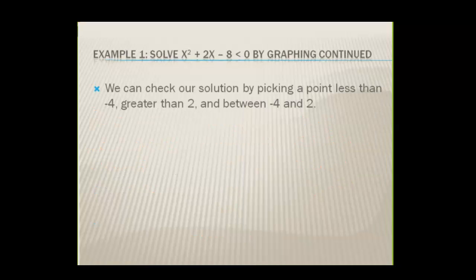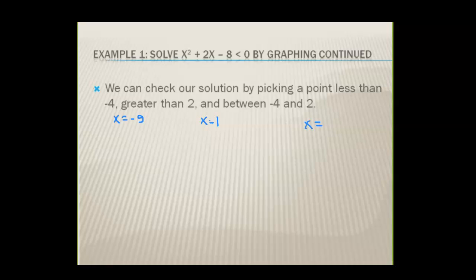We can check our solution by picking a point less than, greater than, and in between — these are case checkpoints. A number less than negative four would be negative five. A number between them — we picked zero yesterday, so let's pick one today. A number greater than two is three. Take negative five, positive one, and three and plug each of those into our original function.